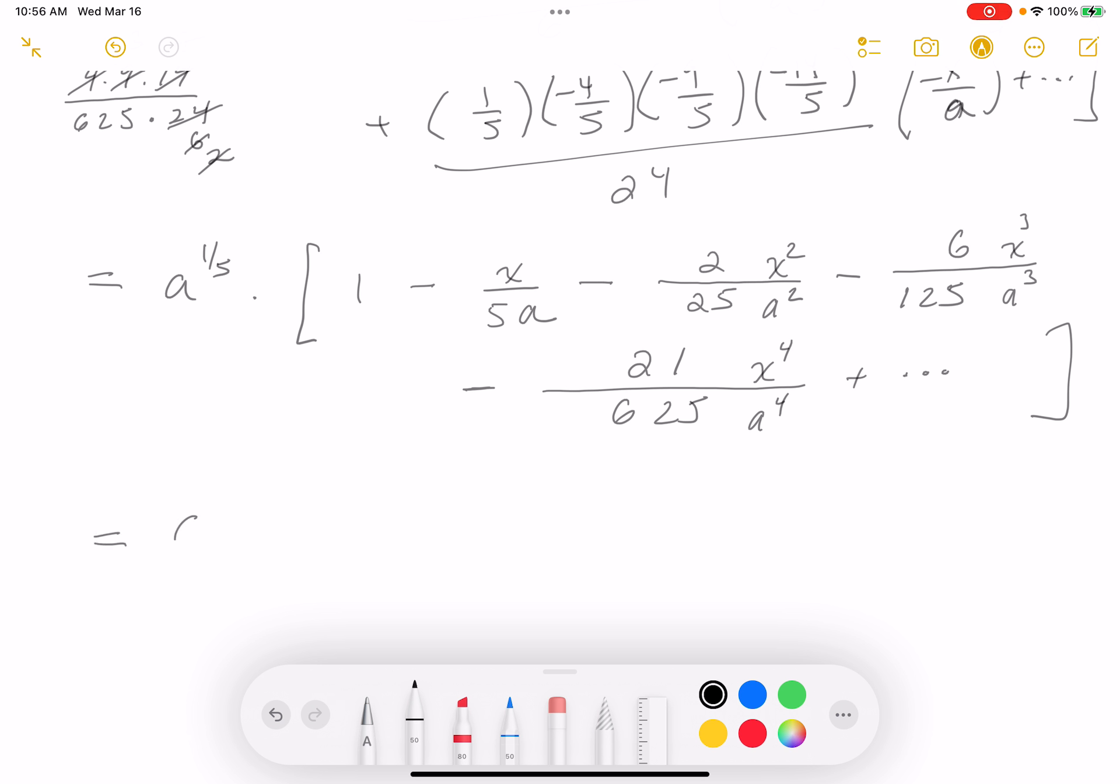So let's multiply this through. So a to the 1 fifth, minus x over 5a to the 4 fifths, minus 2x squared over 25a. Well, that's going to be, what, 10 fifths minus 1 fifths, 9 fifths. 1 fifths minus 6x cubed over 125, 15 minus 1, 14 fifths. These also have a nice pattern, by the way. Minus 21x to the 4. And then you get 625. And then you're going to get a. Let's just talk about the pattern. I'm looking at the power of the a. I forgot to put the a down. 4 fifths, 9 fifths, 14 fifths. That looks like it's gone up by 5, so 21 fifths. All right? And this goes on.